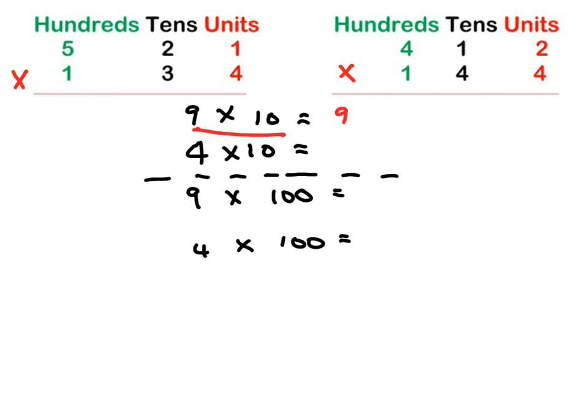9 times 10 is 90, which ends in a zero. 4 times 10 is 40, ends in a zero. But now we've got a hundreds column added in as well. So when we multiply by 100, we add on two zeros. Look here: 9 times 100 is 900. 4 times 100 is 400. So anything times 100 gets two zeros. When we're working with the hundreds column, we add two zeros after we've done the tens column where we add one zero.